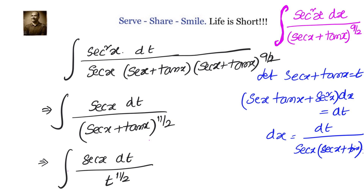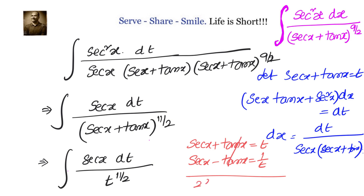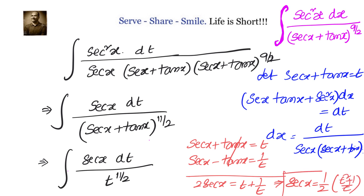The problem now is how to write secant x in terms of t. For that, we use the identity secant squared x minus tan squared x equals 1. If secant x plus tan x equals t, then secant x minus tan x equals 1 by t, because their product equals 1. Adding them gives 2 secant x equals t plus 1 by t, so secant x equals one-half times t squared plus 1 divided by t.